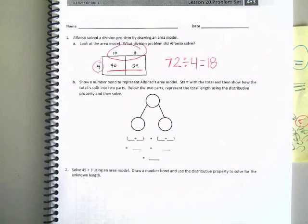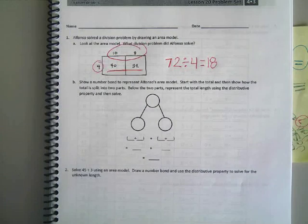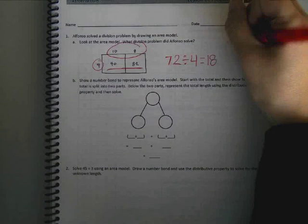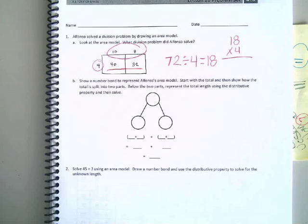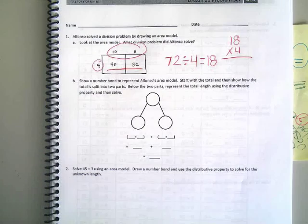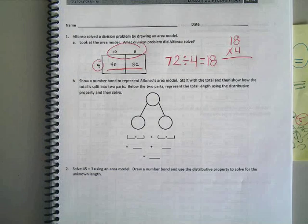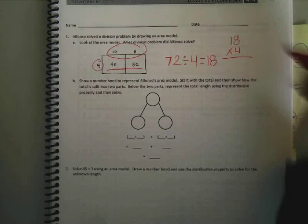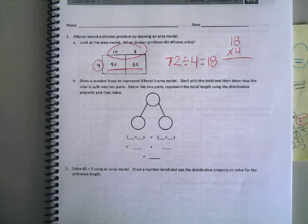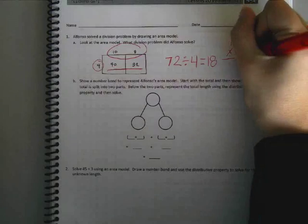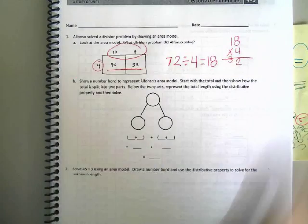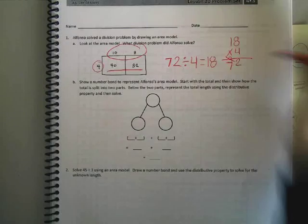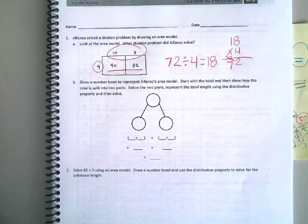If we wanted to check his work, how could we do it? Ella? 18 times 4. Yeah. And if he did it right, what should our answer be? Jessalyn? 72. So let's check it. 4 times 8 is what? 32. 4 times 1? 4. Plus 3? 7. Do they match? Yeah. Wahoo.